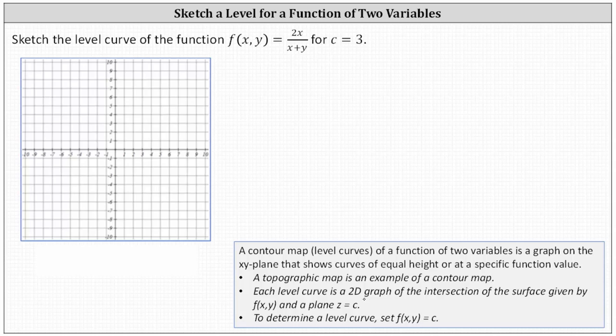Each level curve is a 2d graph of the intersection of the surface given by f of x comma y and a plane z equals c where c is a constant. To determine a level curve, we set f of x comma y equal to c.